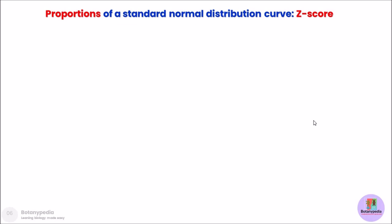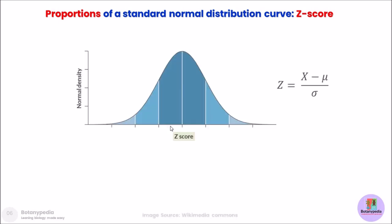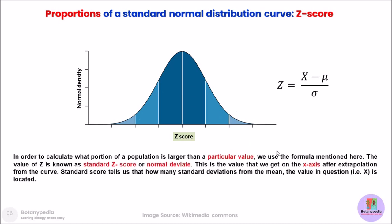Now we will calculate the proportions of a particular standard normal distribution curve. These proportions are also expressed in the form of numbers known as z-scores. To understand this, let's look at this graph. On the y-axis is the normal density, described by y in the equation shown earlier, and on the x-axis you see z-scores. What is the z-score and what is the significance of calculating a particular z-score?